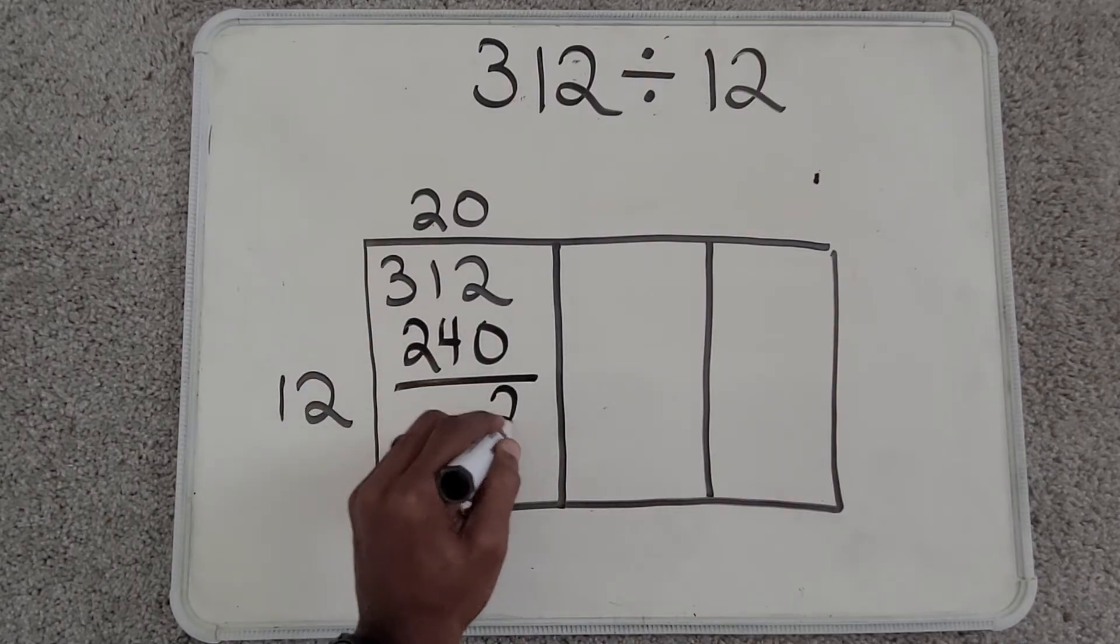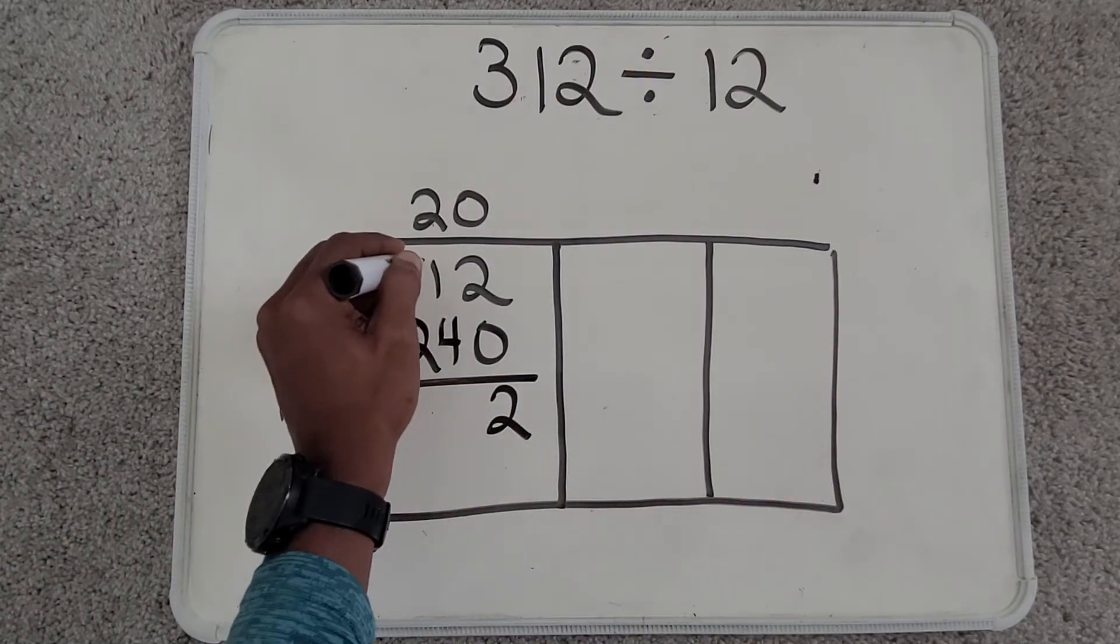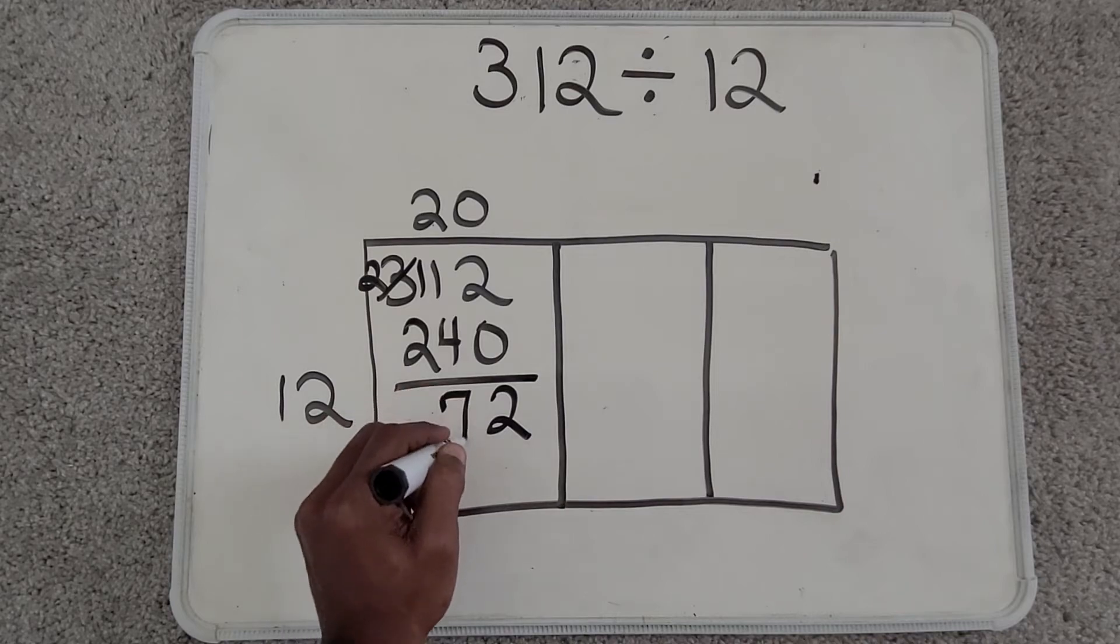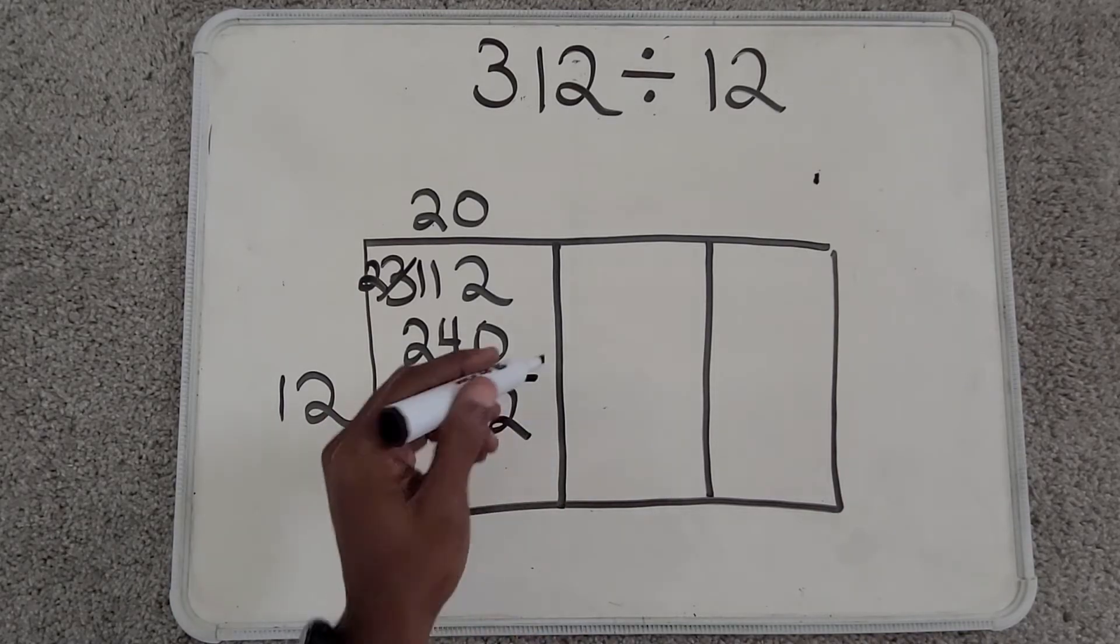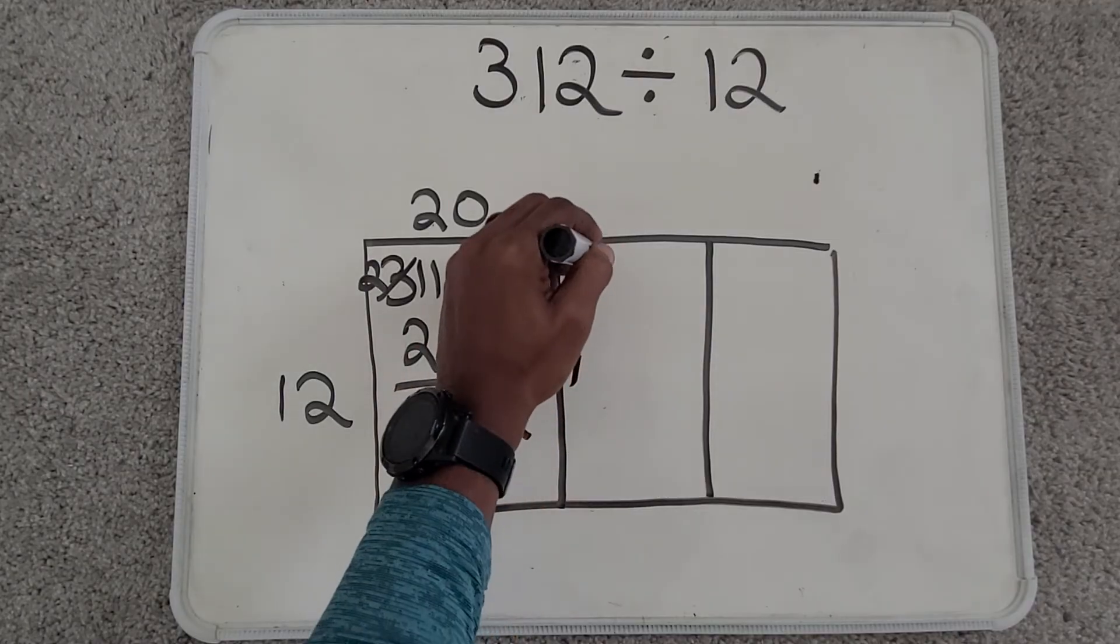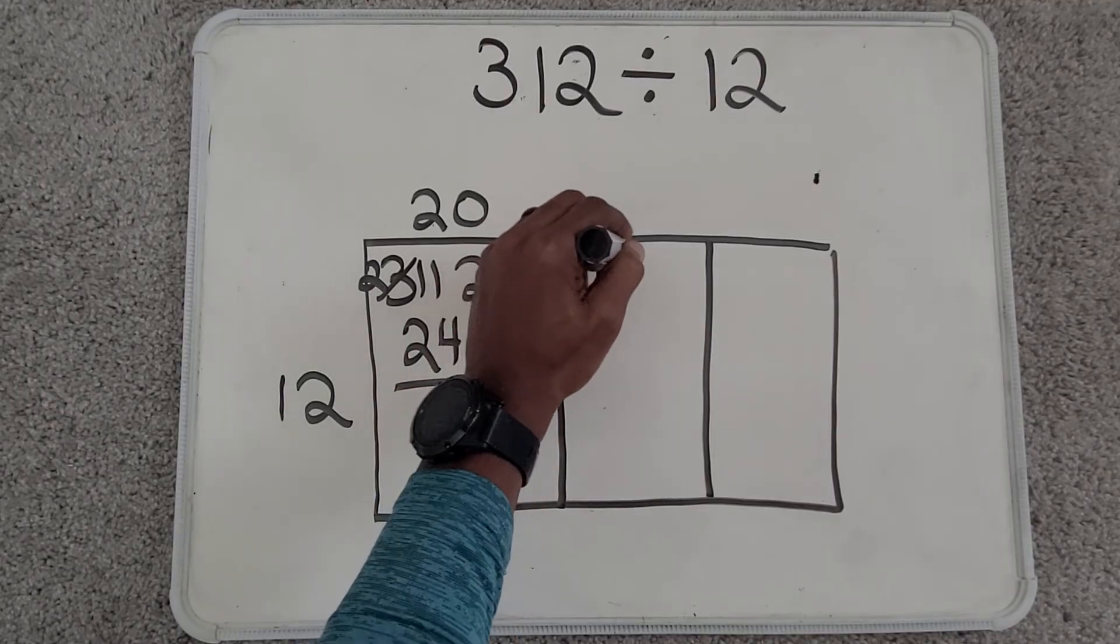I'm going to subtract. And now I have 72 left. I'm going to take that 72. I'm going to carry it over to the next box.